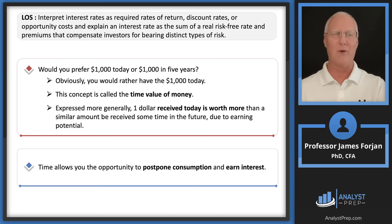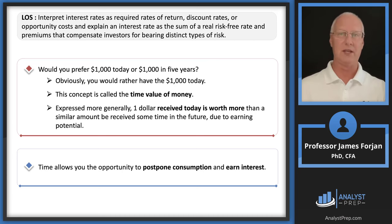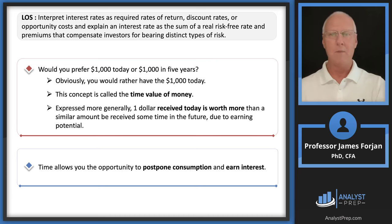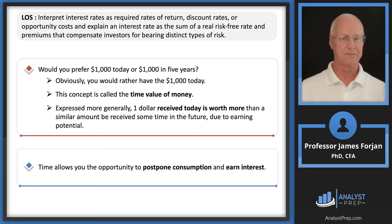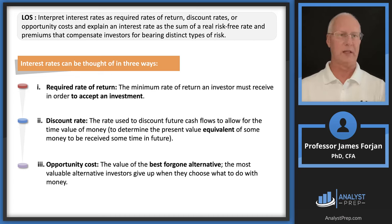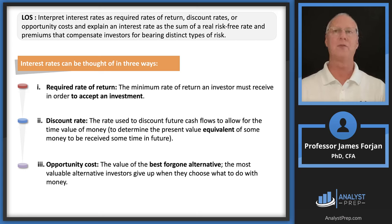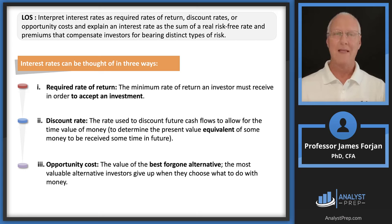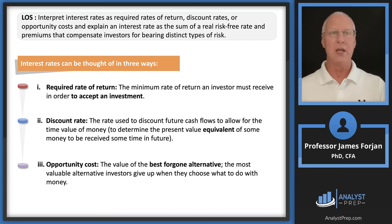We can't force clients. We can say here are the advantages of consuming today, but maybe we could invest it, and five years from today you could build a $100,000 pool instead of a $50,000 one today. Interest rates can be thought of in three ways. We have $1,000 today and we're going to invest it. The required rate of return is the minimum rate we must generate in order to forego current consumption today in order to make that investment.